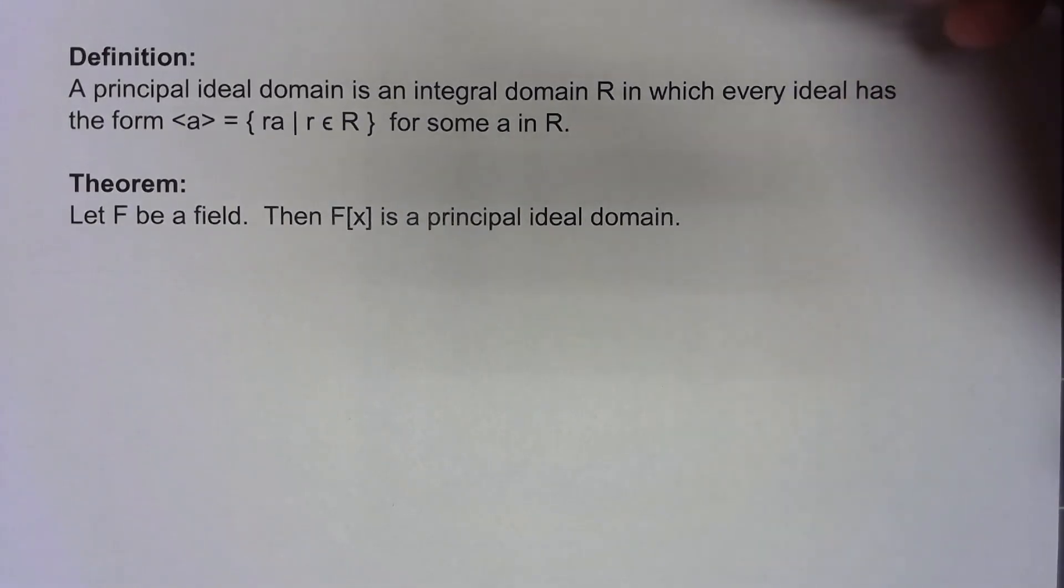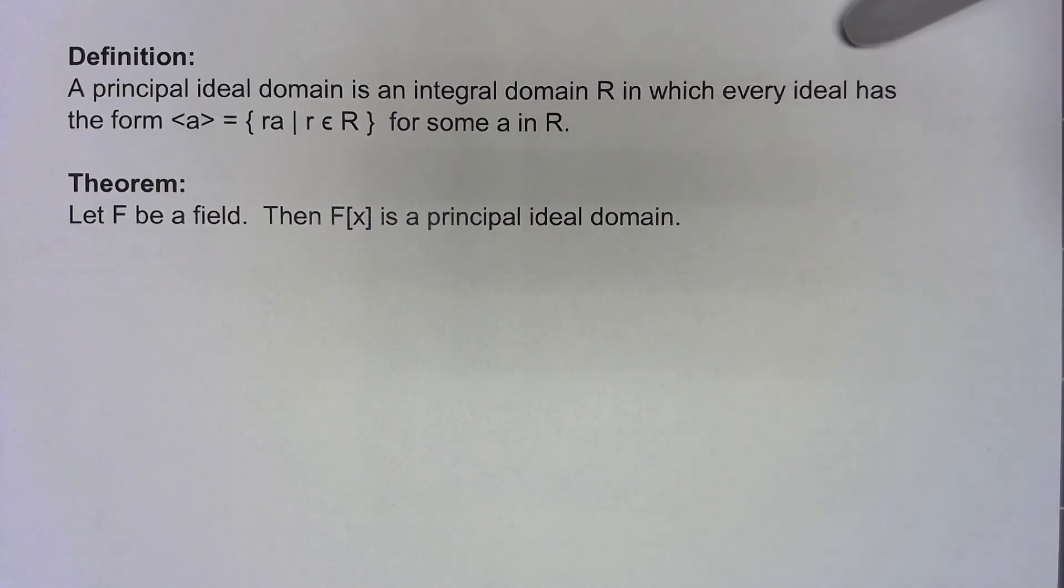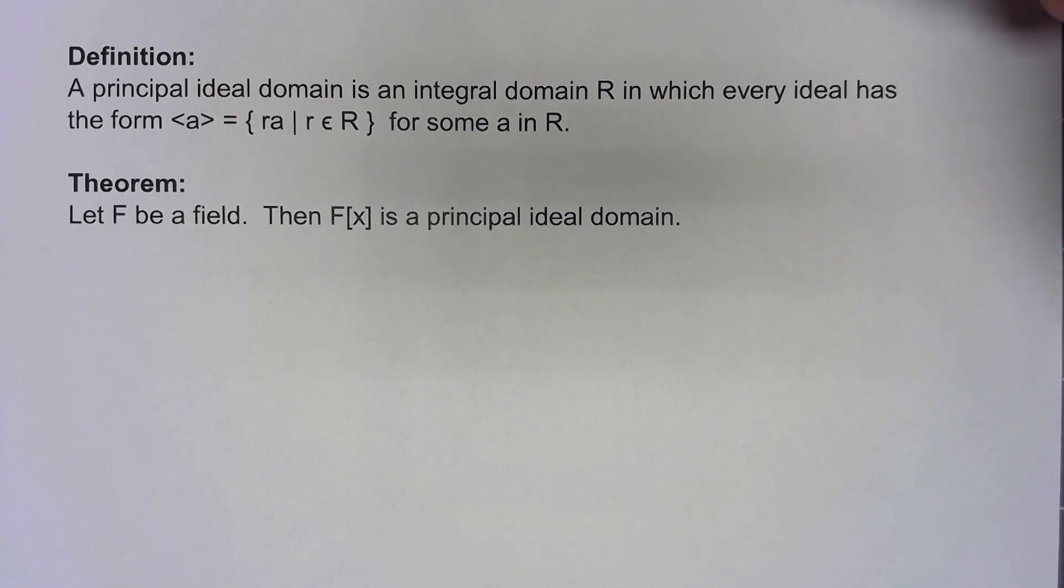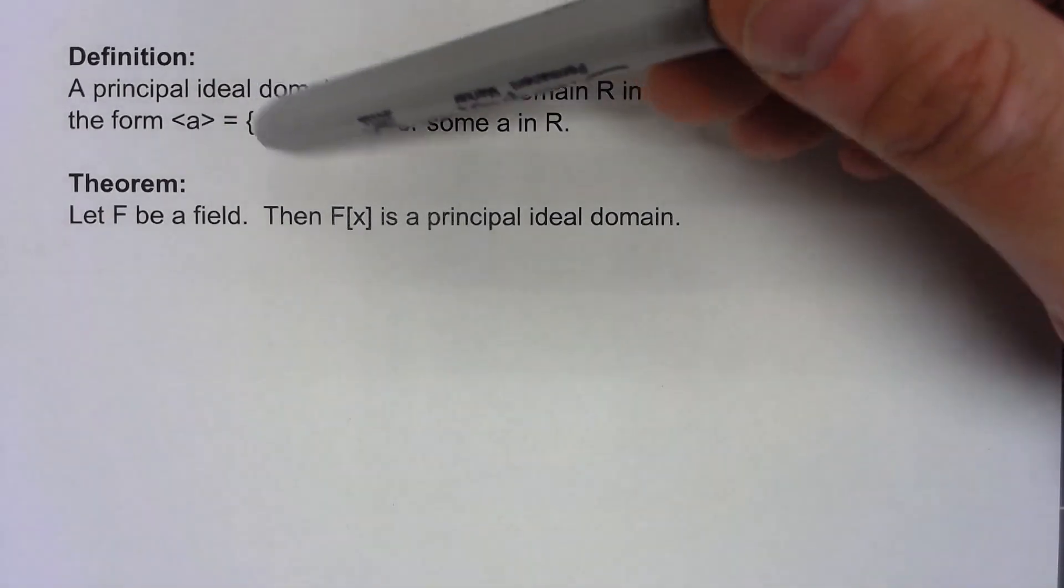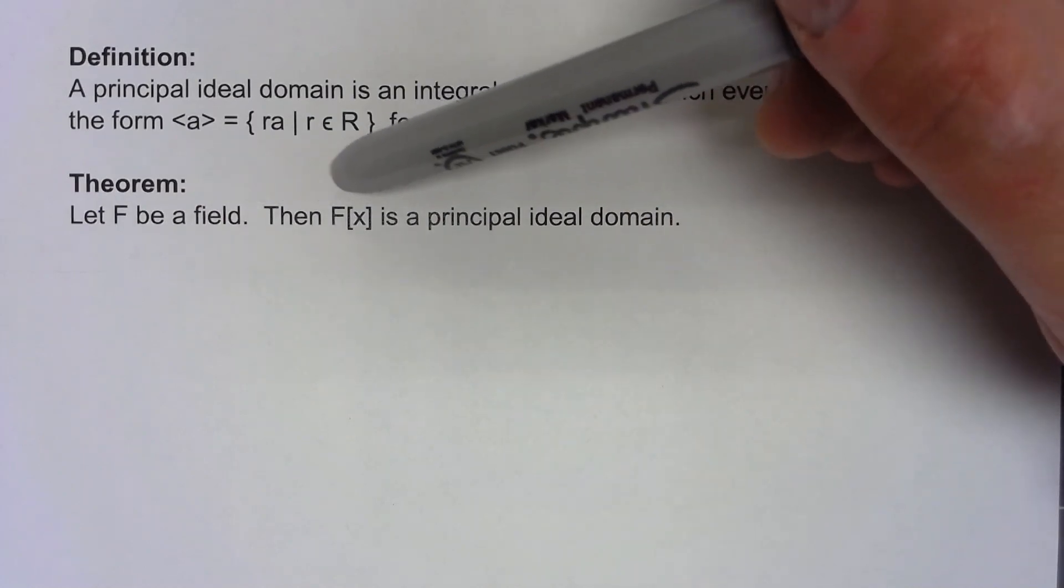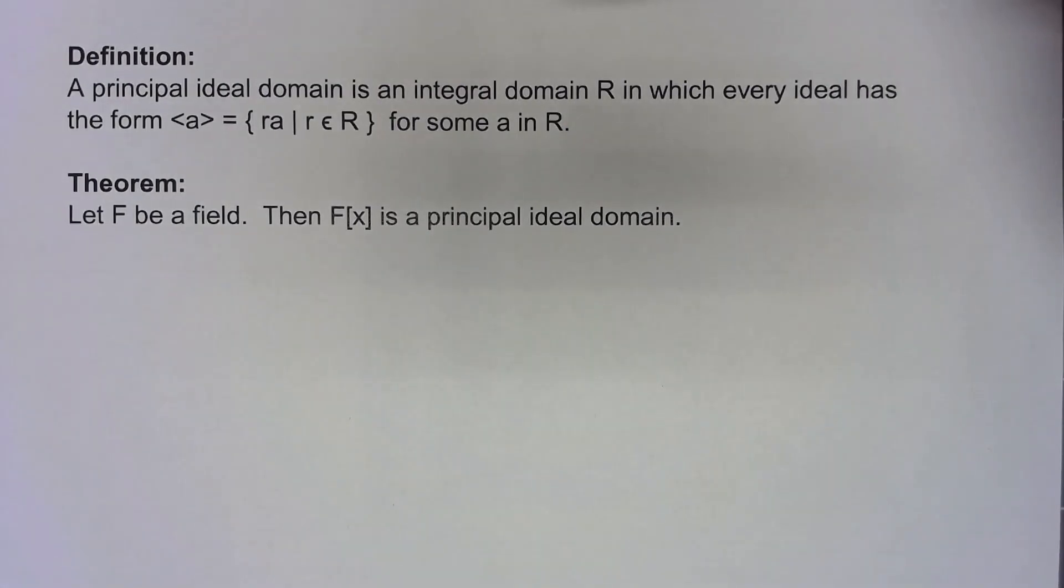A principal ideal domain is an integral domain in which every ideal is generated by a single element. Now if F is a field, then the ring of polynomials generated by that field, F[x], is one of these principal ideal domains.